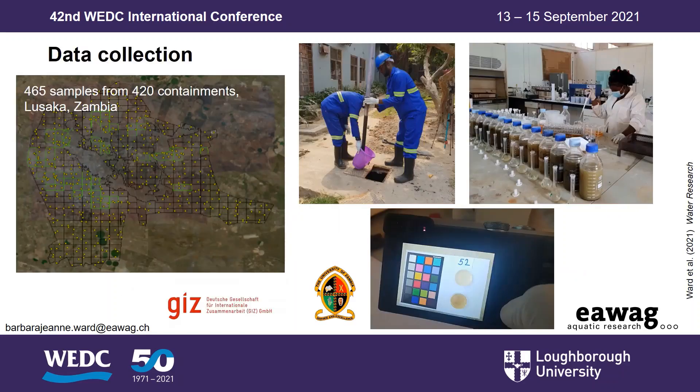We built these models based on a dataset of 465 samples collected from 420 different locations in Lusaka, Zambia. We characterized both laboratory analytical parameters and also performed field measurements. For example, here at the bottom you see us taking a picture of the sludge as a field measurement of color and texture.